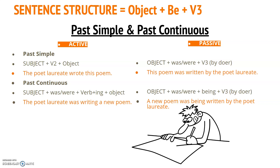It's also worth reminding you that we can leave the doer out of the sentence. We can include 'by' or simply take it out — for example: 'A new poem was being written.'